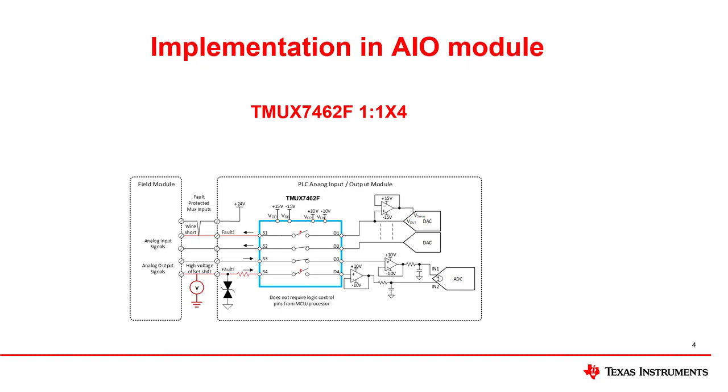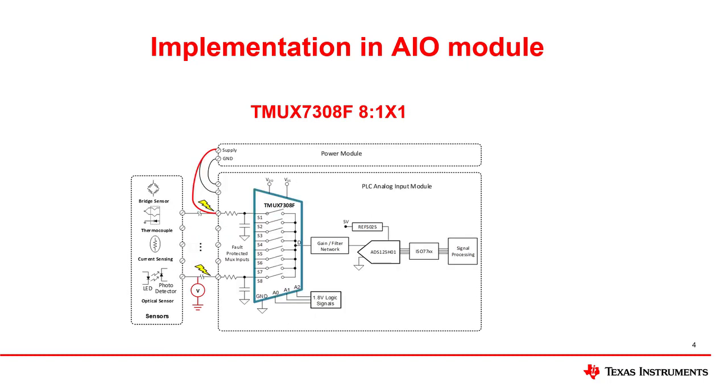The fault-protected multiplexer or switch is implemented into an analog input module by placing the IC between the signal input, such as a sensor or external connector, and signal conditioning, like an MCU, ADC, or processor. A mux can either connect one input to one output, as shown here with the TMUX74C2F, or designers can use the TMUX730F, which can be used to connect multiple inputs to one output, still protecting all signal paths from fault events while also reducing component count.